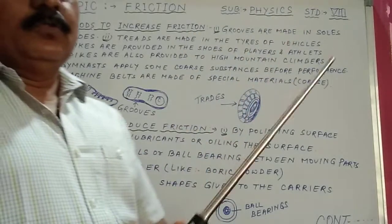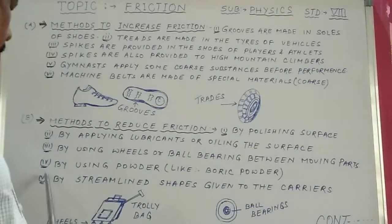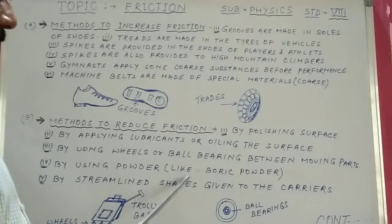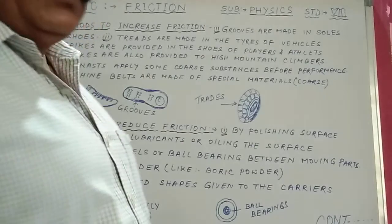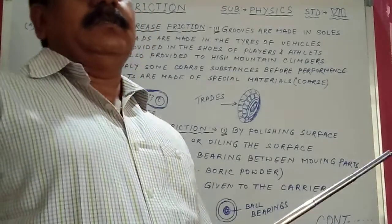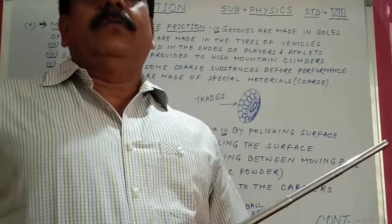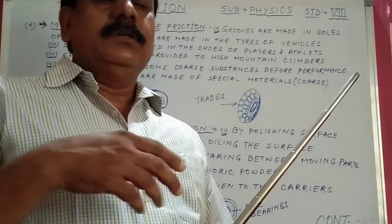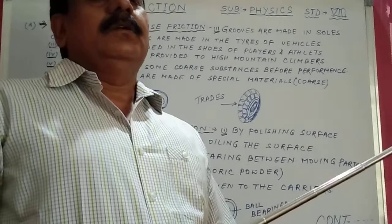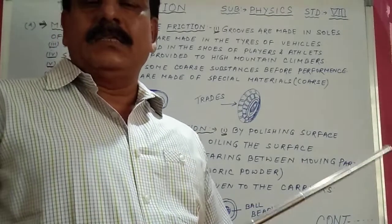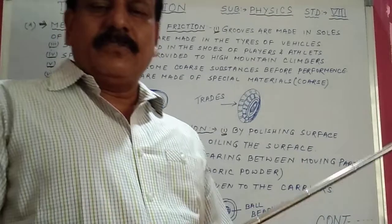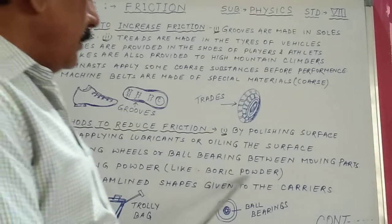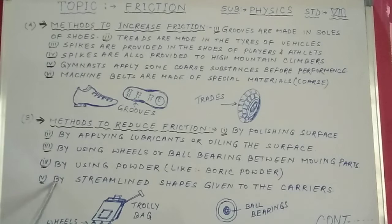Number four: by using powder, like boric powder. By using powder we can reduce friction. You have seen while playing carrom you use boric powder so that the surface is smooth and you can play easily — to reduce friction.